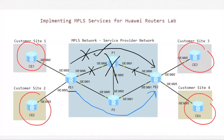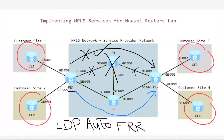This takes time, and the restoration time can have a significant impact on customer services. For mobile operator networks where network availability and reliability are important factors, we have to enhance network availability and minimize the restoration time. LDP Auto FRR can be used to minimize the restoration time.